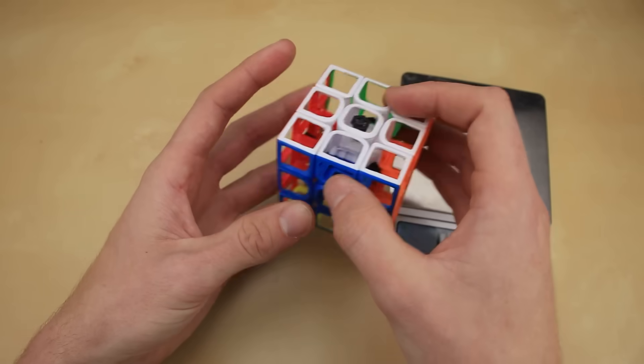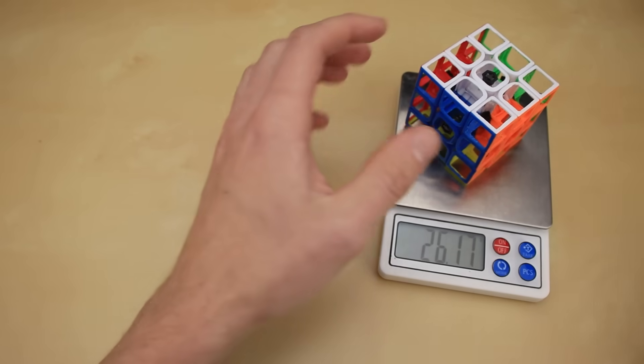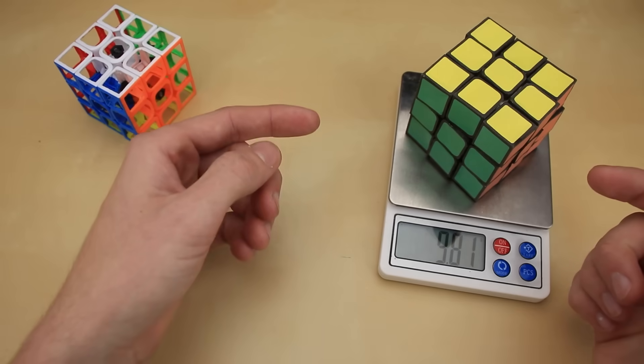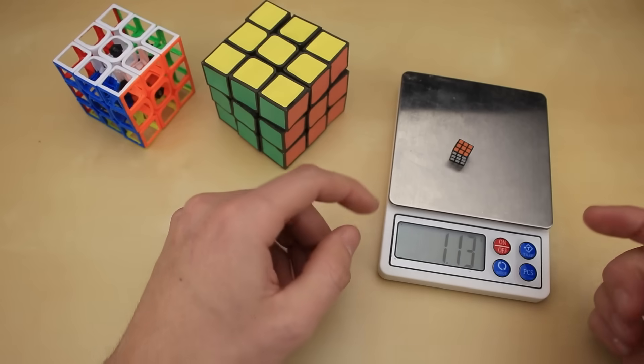This is the world's lightest 3x3 Rubik's Cube, coming in at just 26 grams. Except for this one that's made out of paper and weighs just 10 grams, or this one that weighs just 1 gram.